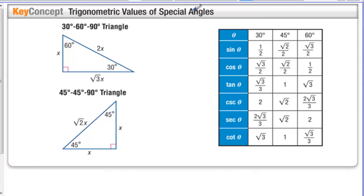Trigonometric values of special angles. These are special angles because they have special values attached to them. Here's the chart we just filled in, with the exception of secant, cosecant, and cotangent — those are just the reciprocals of cosine, sine, and tangent.